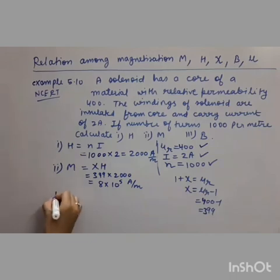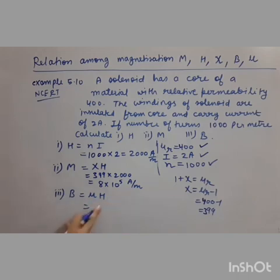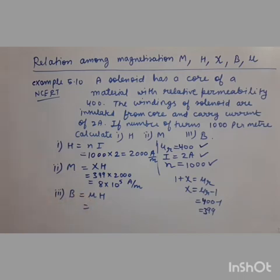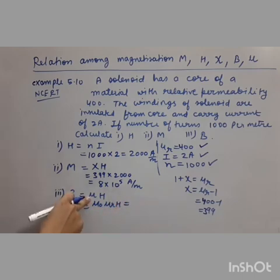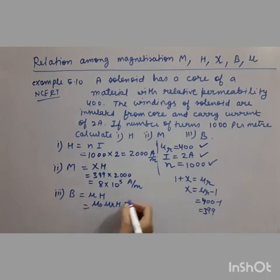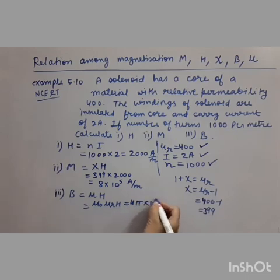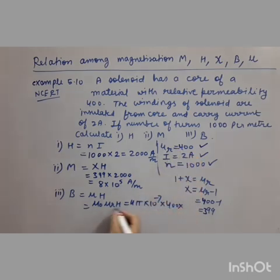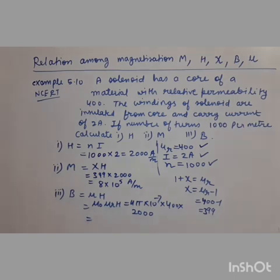For the third quantity, B: apply B = μH = μ₀μᵣH. We know μ₀ = 4π × 10⁻⁷, μᵣ = 400, and H = 2000. Putting all these values together, we get B approximately equal to 1 tesla.